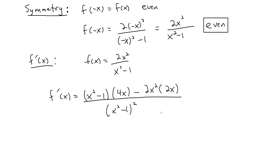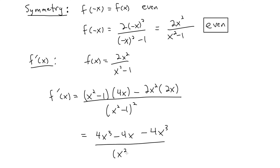Let's clean up the quotient rule result. We get 4x cubed minus 4x minus 4x cubed in the numerator — and look at that cancellation. So we end up with negative 4x over quantity x squared minus 1 squared.